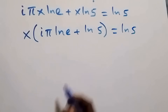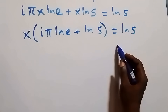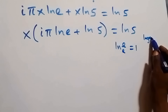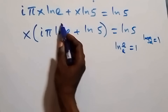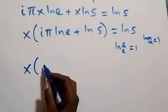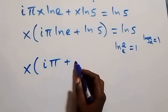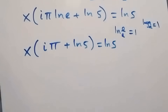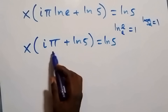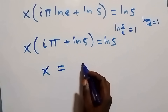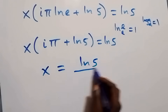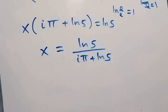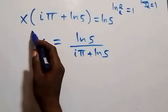Since natural log has base e, ln e equals one, because log base a of a is always one. So we have x times (i pi plus ln five) equals ln five. Dividing both sides by (i pi plus ln five), we get x equals ln five divided by (i pi plus ln five). This is the solution from Method 1 using natural logarithm.